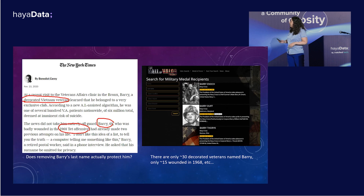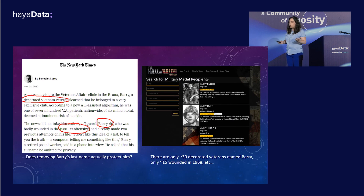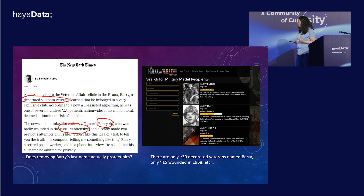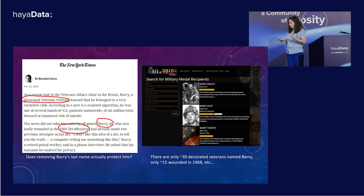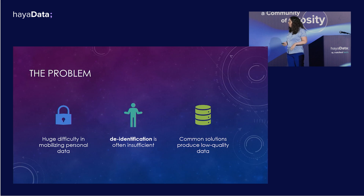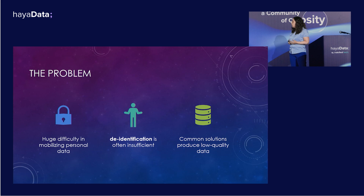So I went online to this website called the Hall of Valor Project, and I plugged in the name Barry. And guess what? There are only 30 people with the name Barry who are decorated veterans. Now, if you limit this to 1968, you get only 15, and so on. So we already understand that it's easy enough to identify individuals, even if you take away direct identifiers.